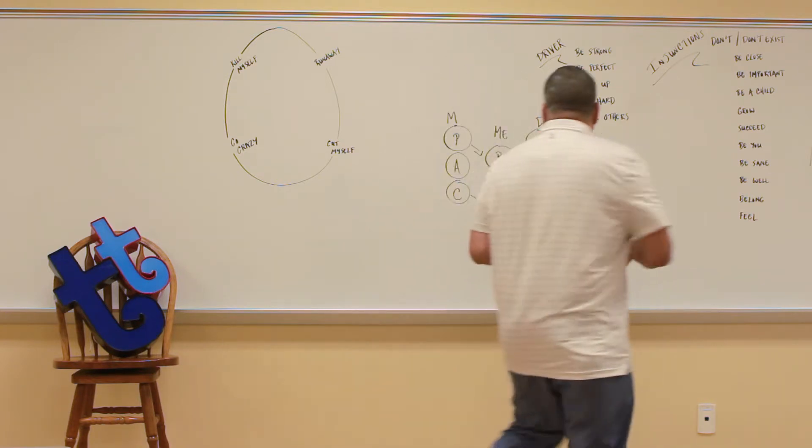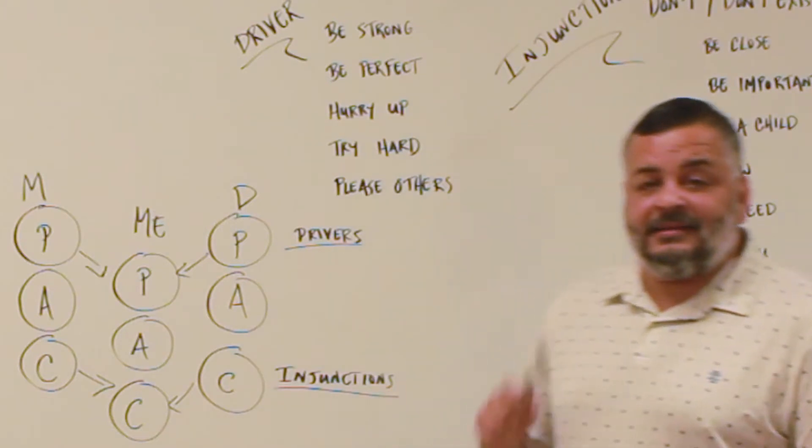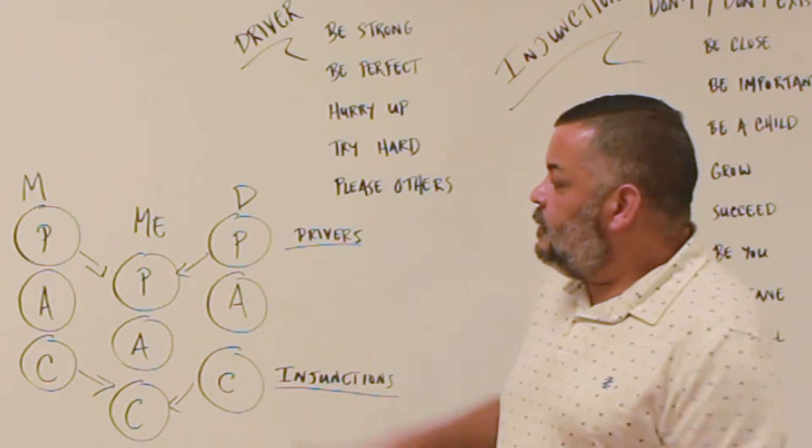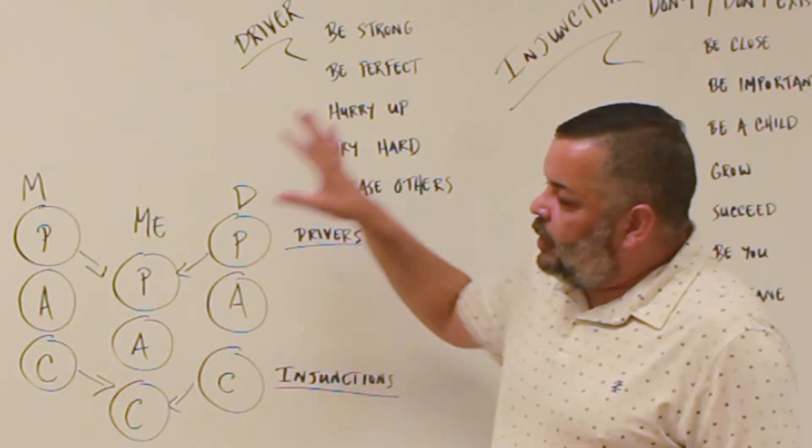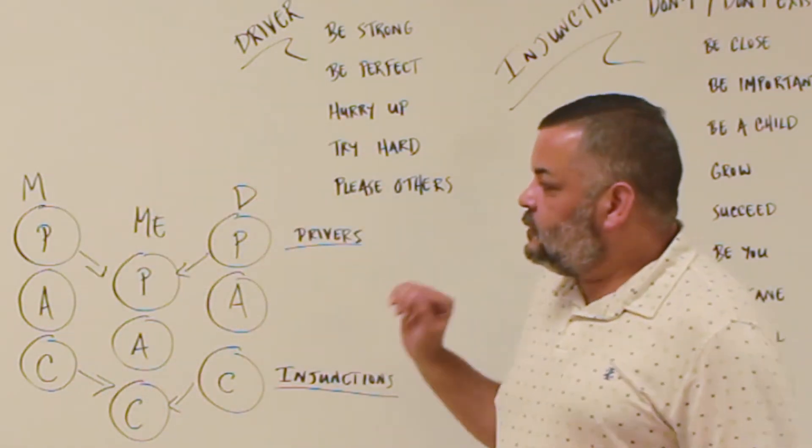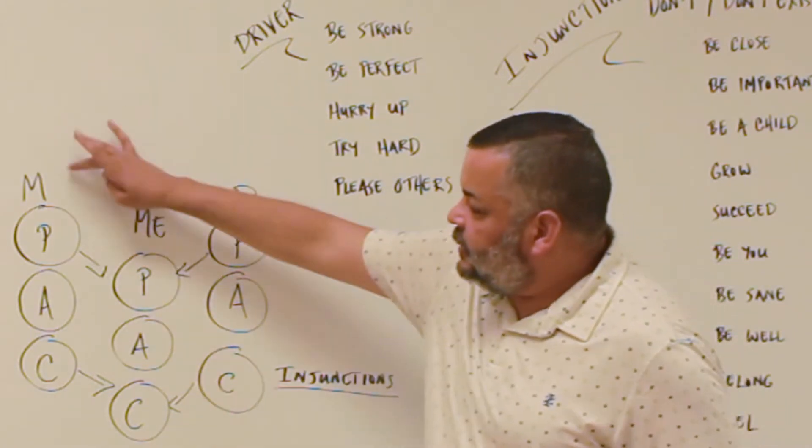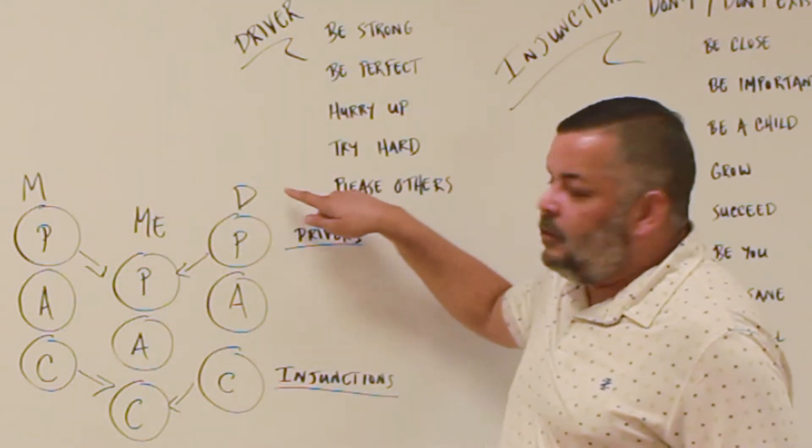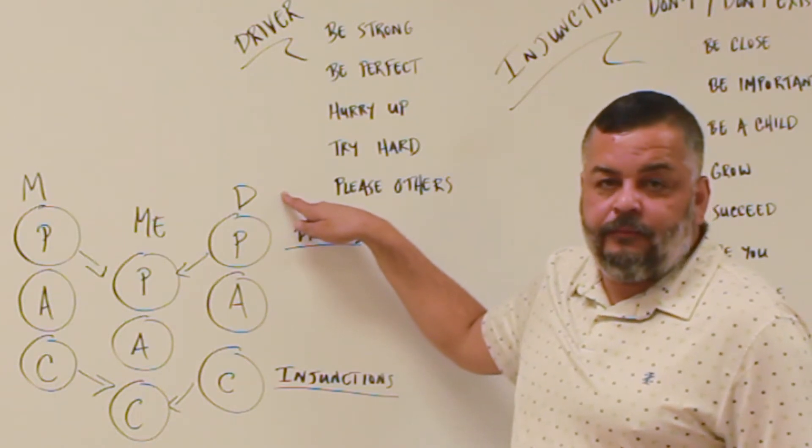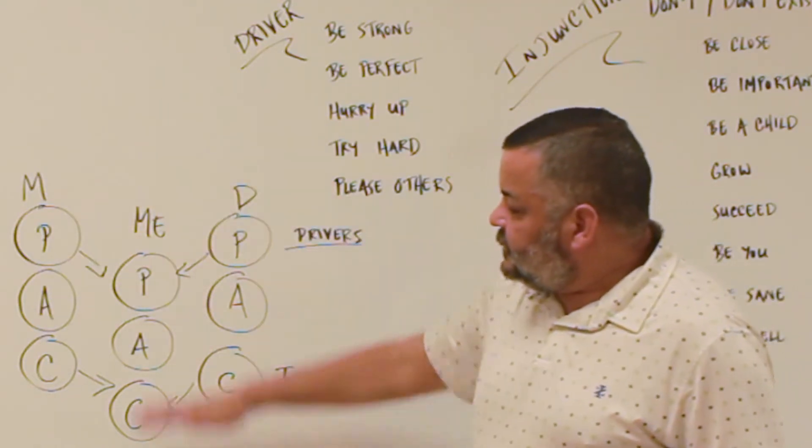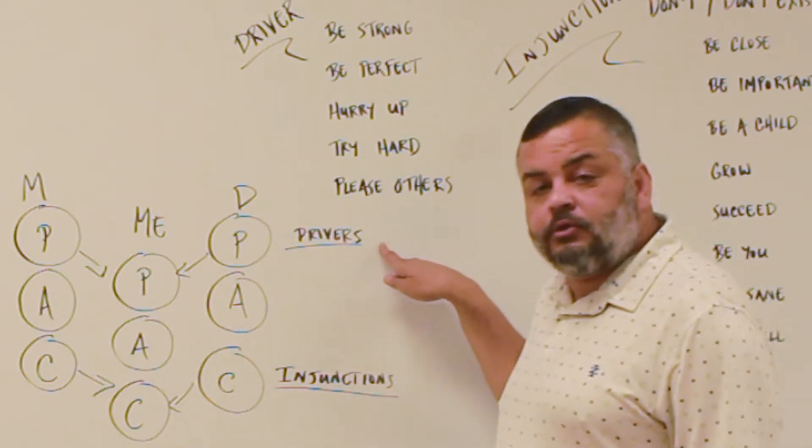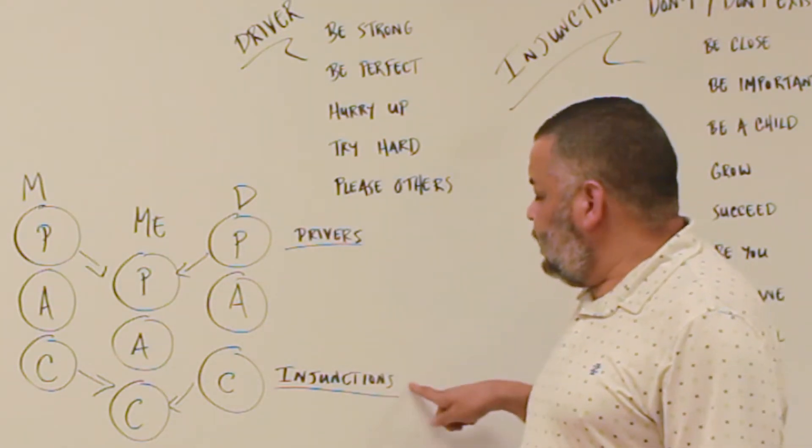So in the last Tim Talk I discussed ego states. This is what we call a script matrix. So we are looking at the ego states of my mother, ego states of me, and the ego states of my father. And I draw this this way so we can display what's called driver behavior and injunctions.